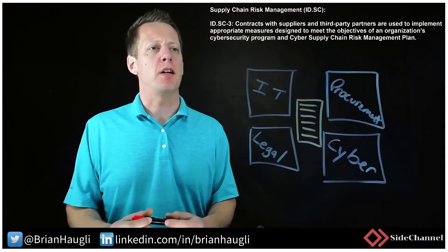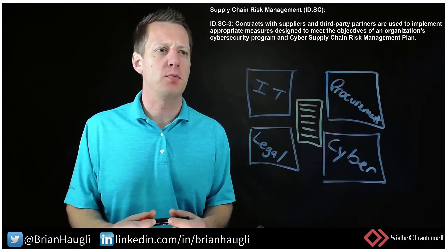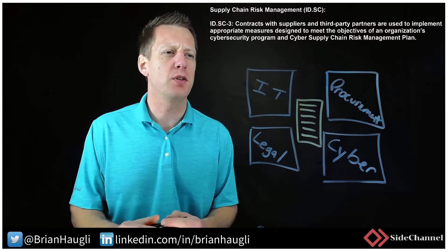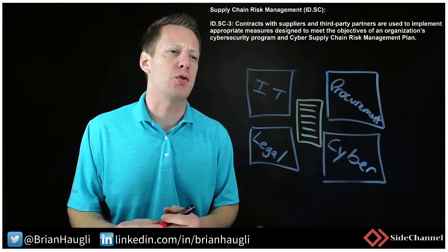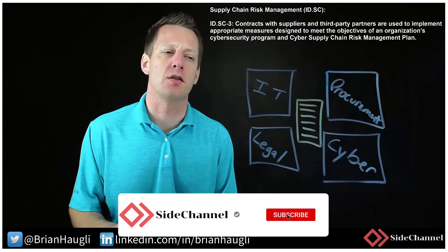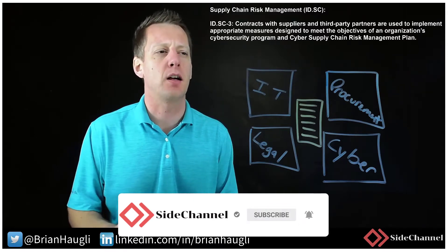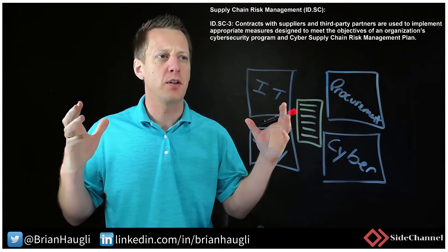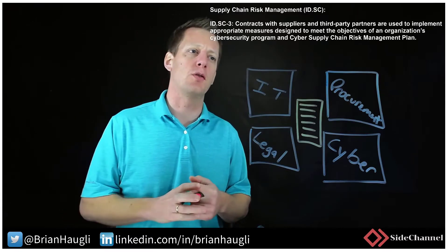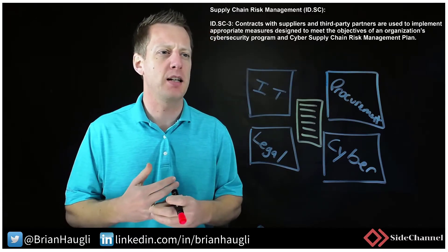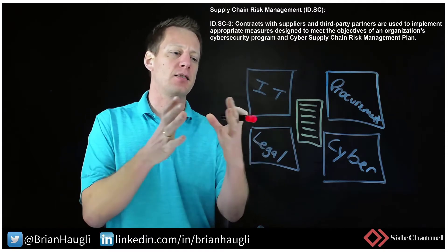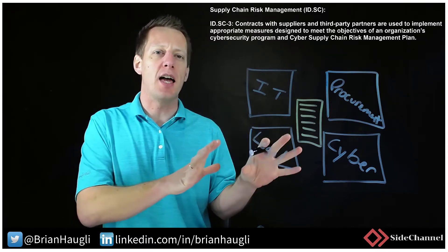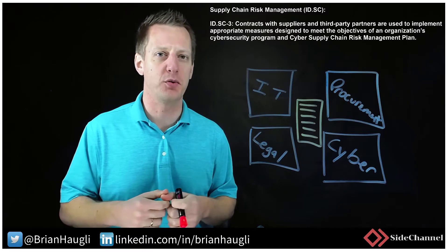The next subcategory control inside of supply chain risk management is ID.SC-3: contracts with suppliers and third-party partners are used to implement appropriate measures designed to meet the objectives of an organization's cybersecurity program and a cyber supply chain risk management plan. Identifying those suppliers and making some type of risk management process should inform and create a supply chain risk management plan, and that plan needs to abide by the cybersecurity program policies of the organization.